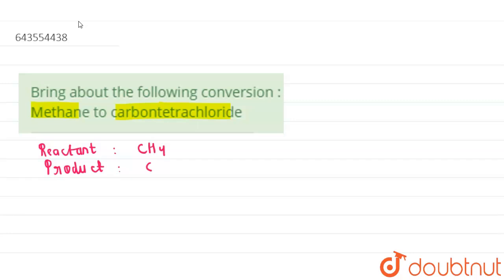And the product is carbon tetrachloride which is CCl4. So how to achieve this? It can be achieved by treating methane with chlorine in the presence of sunlight.